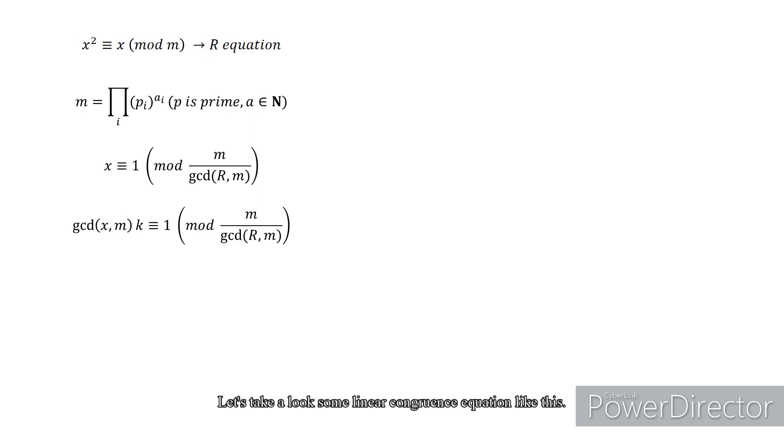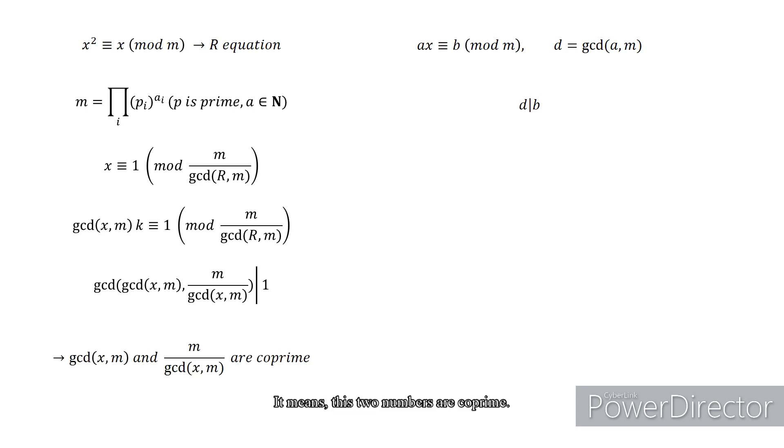Let's take a look at some linear congruence equations. This equation has a solution only if this equation satisfies, meaning b is divisible by d. So our equation has a solution only if these two numbers are coprime.